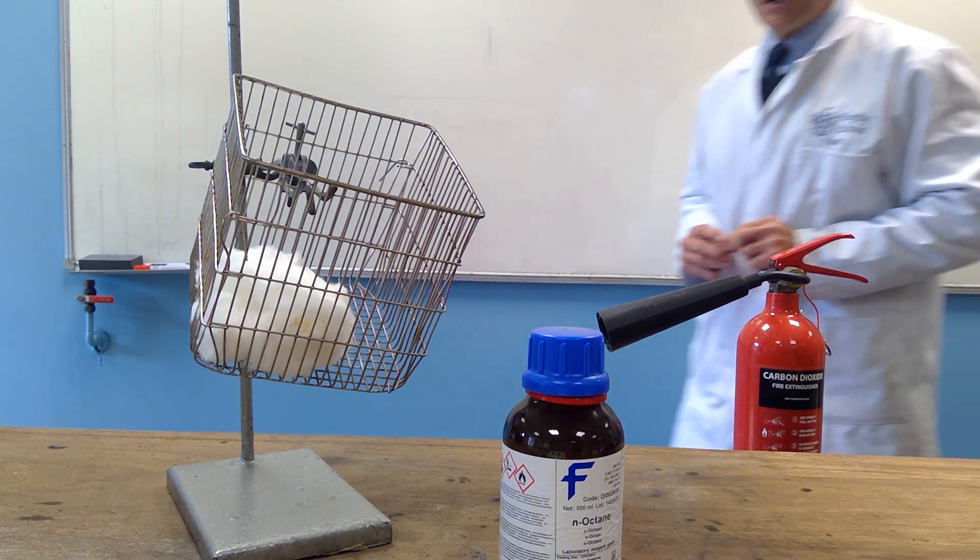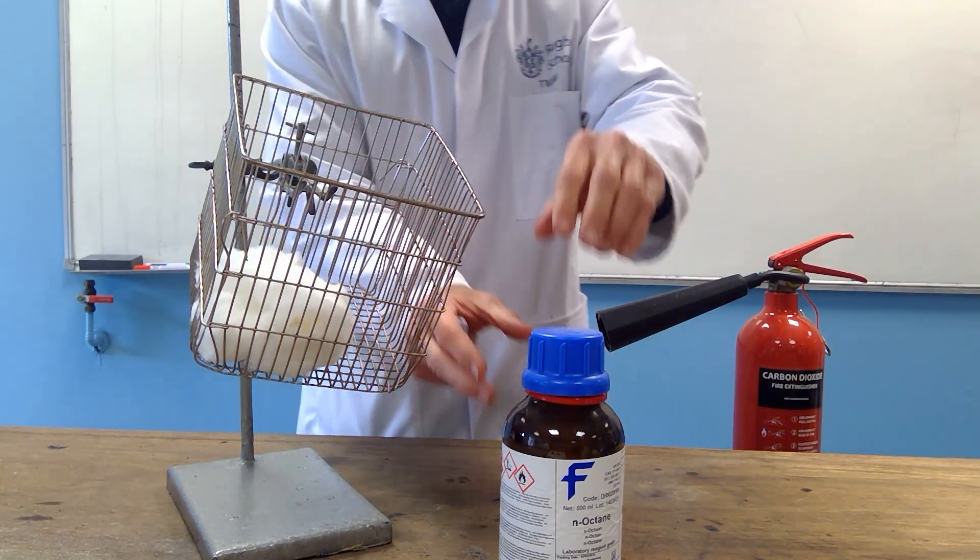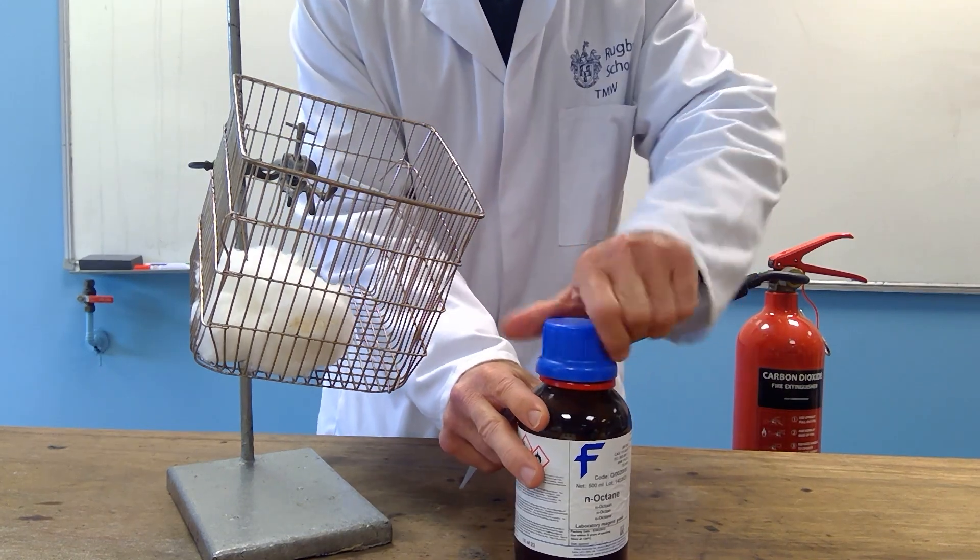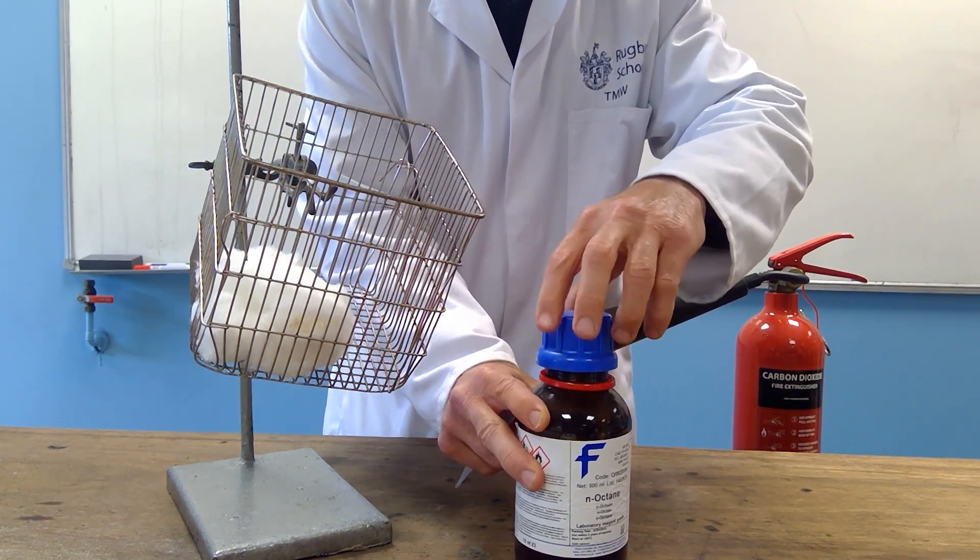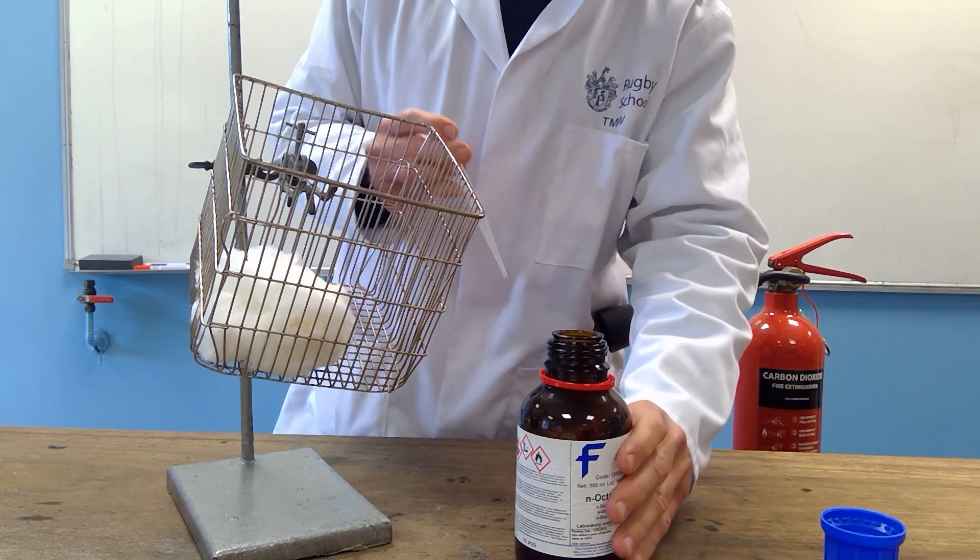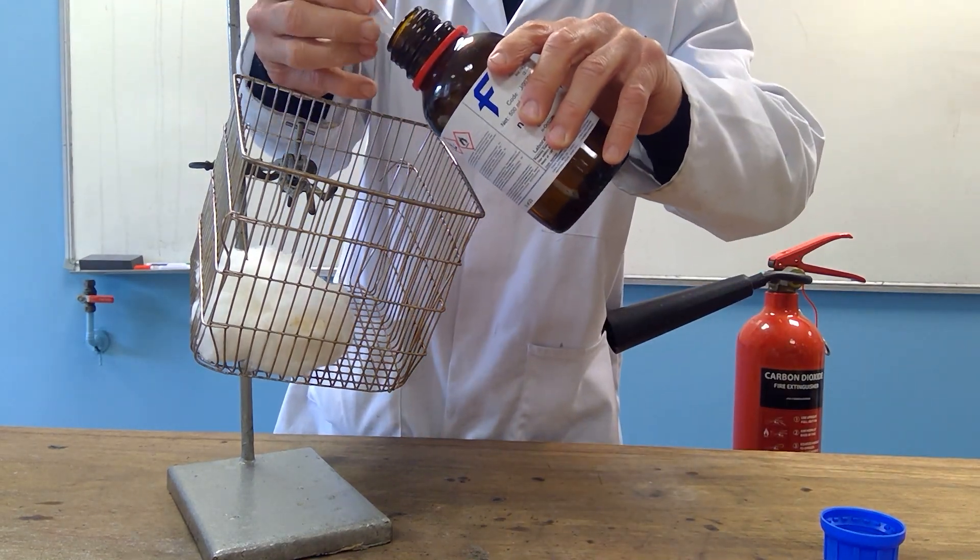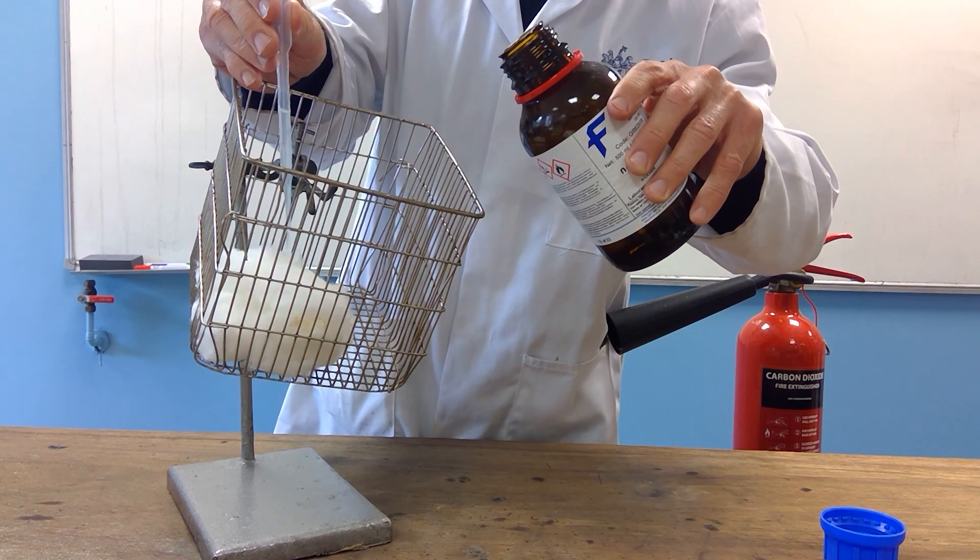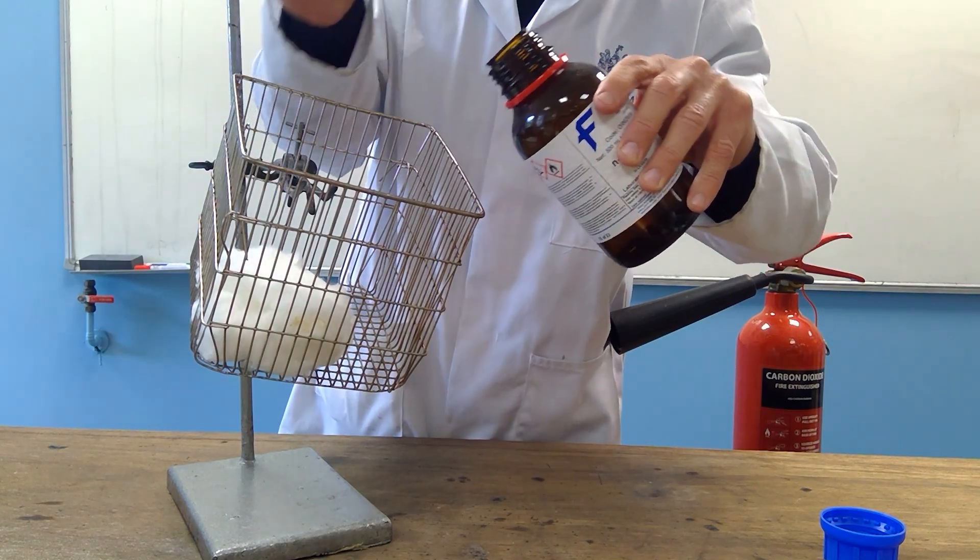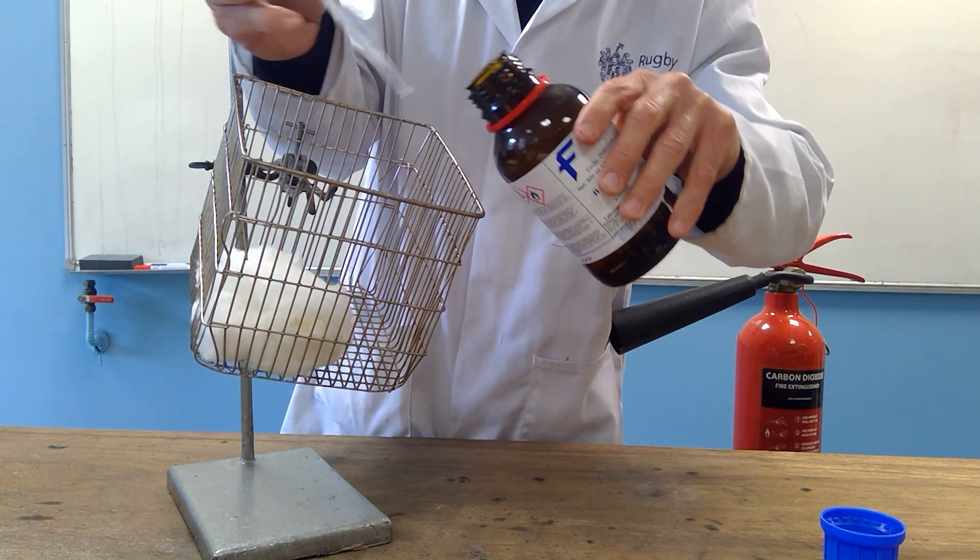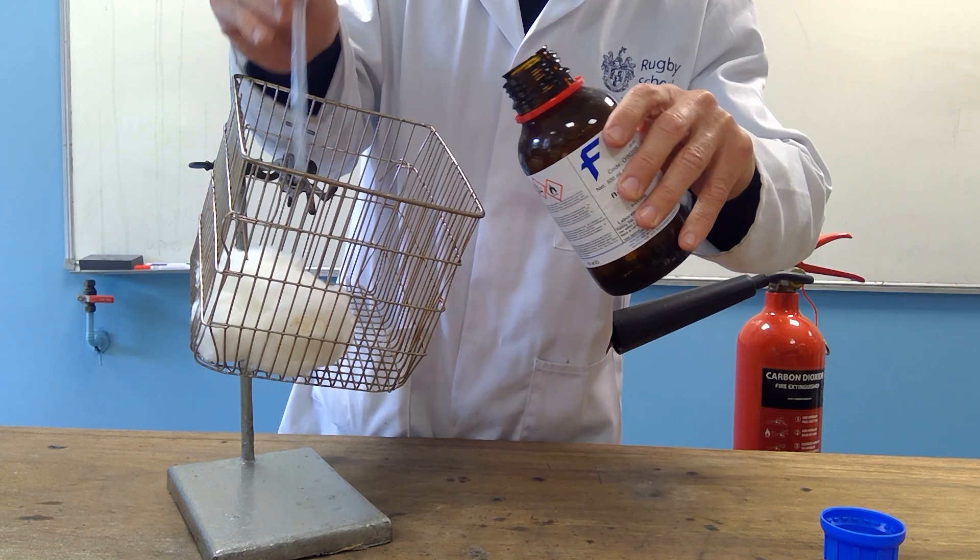The force of the carbon dioxide means that it would be wise for me to put the fire into a condition where it will not be able to move. So I put some octane onto some cotton wool. We're going to set fire to it, and we can see how good this fire extinguisher will be.